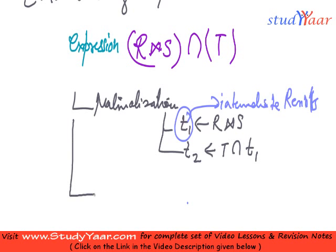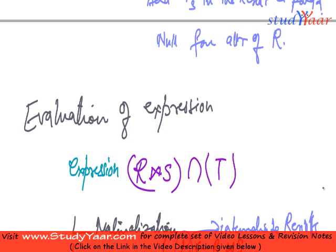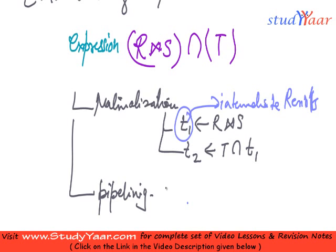The other method is that of pipelining. In pipelining what we do is, let's suppose my R natural join S has in its result 100 tuples. So in pipelining what we are going to do is.